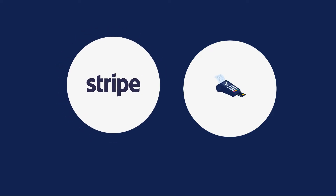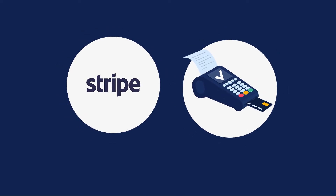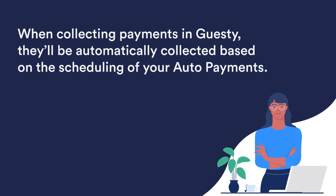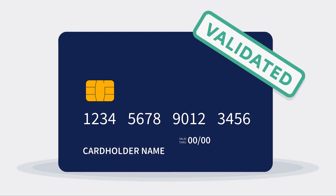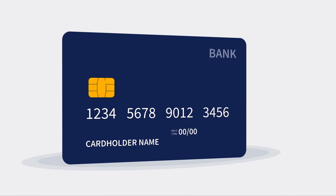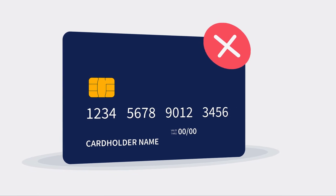You can choose whether payments are collected using Stripe, or if you'd like to collect them outside of Guesty. When collecting payments in Guesty, they'll be automatically collected based on the scheduling of your auto payments. Vrbo validates each guest's credit card and securely passes the details on to Guesty. Note that future credit card payments can be unsuccessful, as Vrbo simply validates the card for the amount of the guest's booking fee.